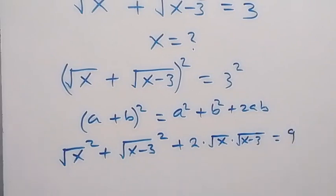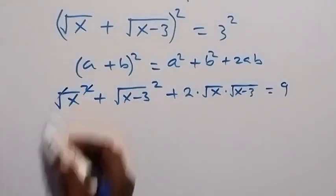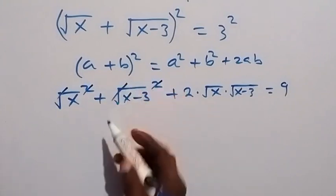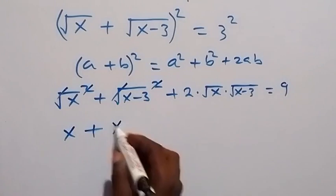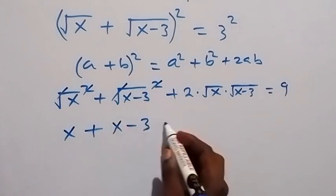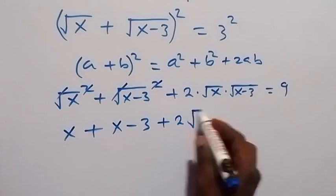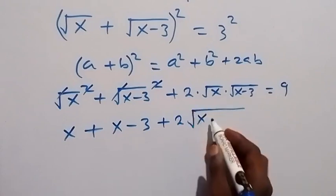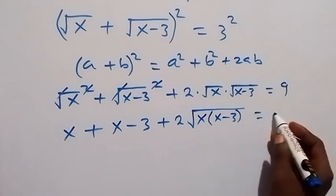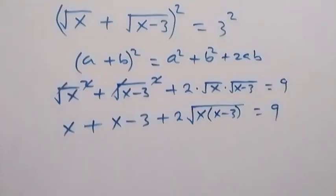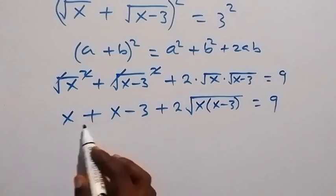We can write 3 squared as 3 times 3 which is 9. Then the square cancels the square root here, and also the square cancels the square root here. We are left with x plus x minus 3, then plus 2 times root of x times x minus 3, which equals 9.